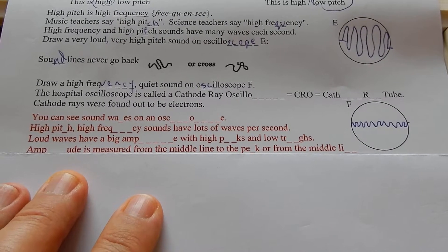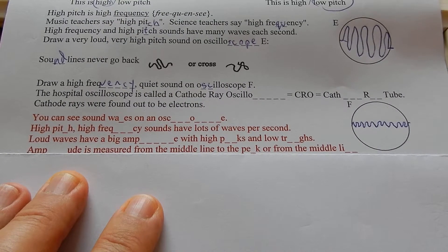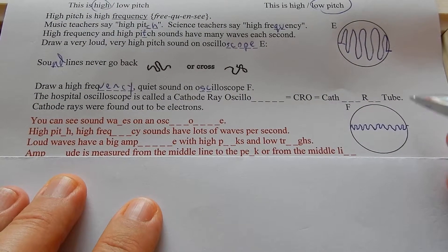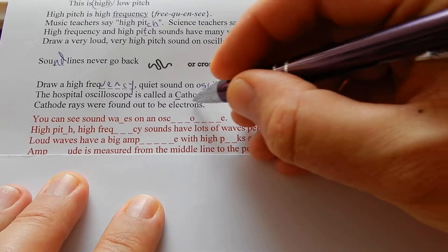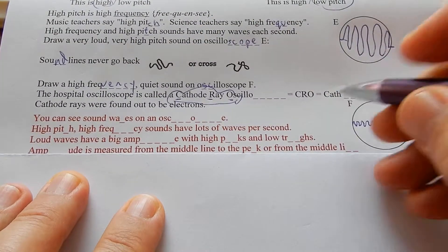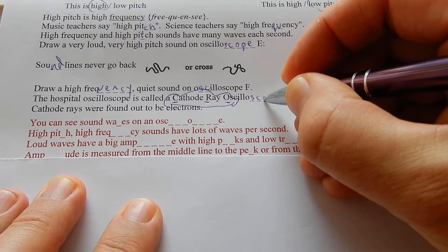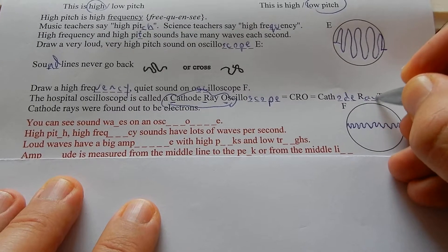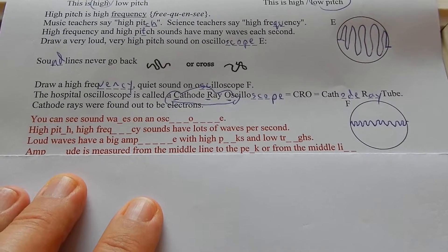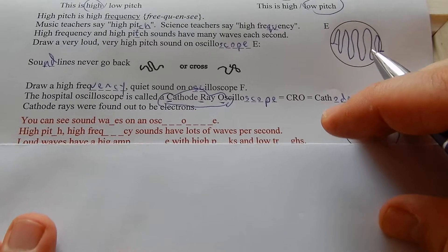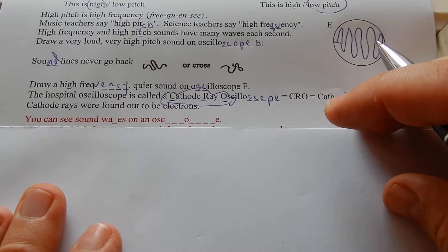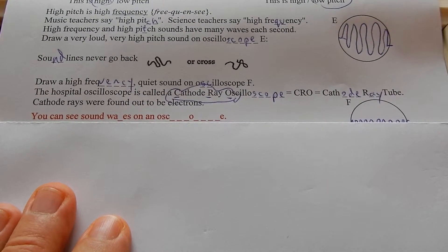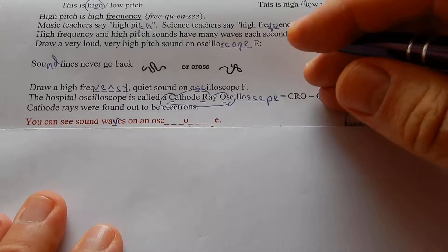The hospital oscilloscope is called a cathode ray oscilloscope. Cathode ray oscilloscope equals CRO. Cathode ray tube is the other name. Cathode rays were found out to be electrons because we didn't know they were the same thing for years. You can see sound waves on an oscilloscope.